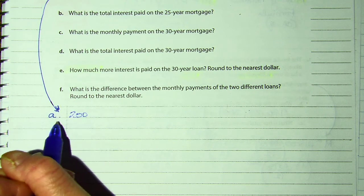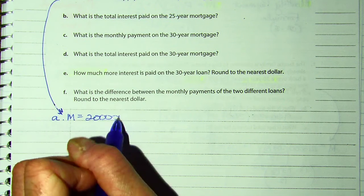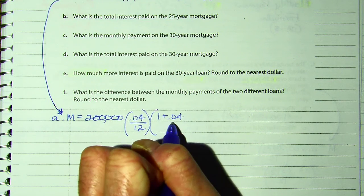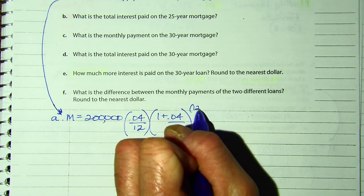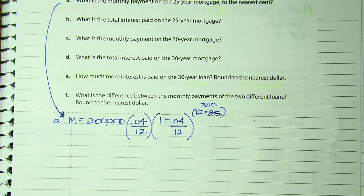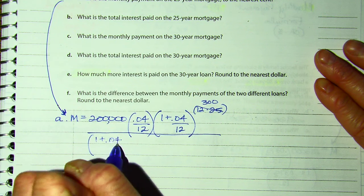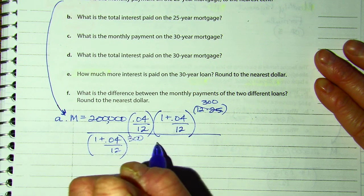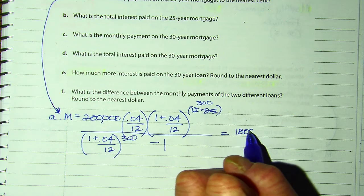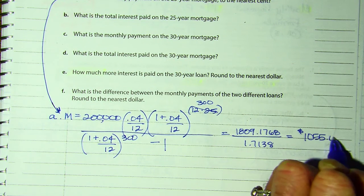In this case, it says you're borrowing — so M, my monthly payment, is the amount I'm borrowing times our rate, which they said is 4%, divided by 12, times 1 plus .04 divided by 12, to the 12 times 25. I'm going to simplify this: 12 times 25 is 300. And then I'm going to divide by 1 plus .04 divided by 12 to the 300th, and then minus 1. I got 1809.1768 divided by 1.7138, so their monthly payment is $1,055.65.